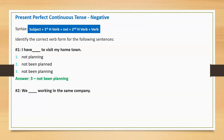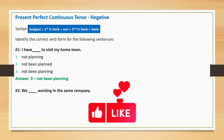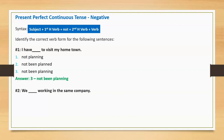Sentence two: 'We blank working in the same company.' Option one: has not been. Option two: have not been. Option three: not been. Correct answer: have not been. Full sentence: 'We have not been working in the same company.'